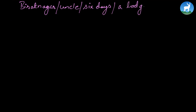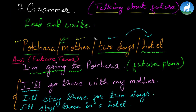It starts with: Biratnagar, uncle, six days, lodge. We are following the same format here. You can also use 'I will go to Biratnagar' — that is simple future; the future is indefinite, we don't know when, but somewhere in the future I'll go to Biratnagar. You can also write 'I'm going to Biratnagar' — because it's talking about a future plan, that is regarded as simple future. So let's follow the example, just like the Pokhara one.